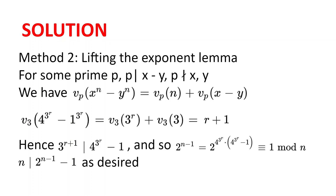So v_3 of 9 is equal to 2, since 3 squared is 9. We have that v_3 of 4 to the power of 3 to the power of r minus 1 to the power of 3 to the power of r equals v_3 of 3 to the power of r plus v_3 of 3, which equals r plus 1. So 3 to the power of r plus 1 divides 4 to the power of 3 to the power of r minus 1.